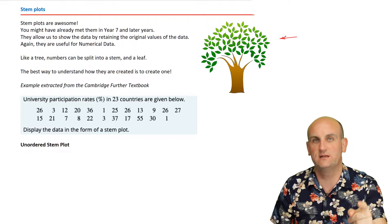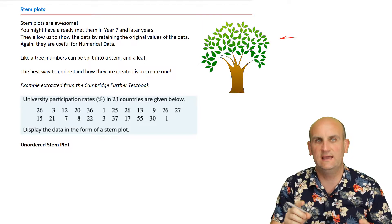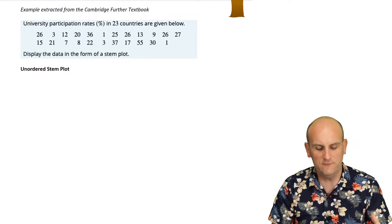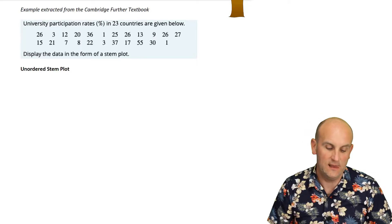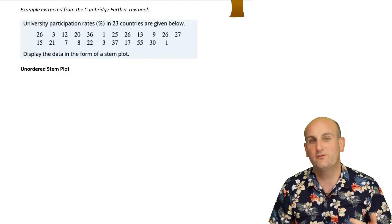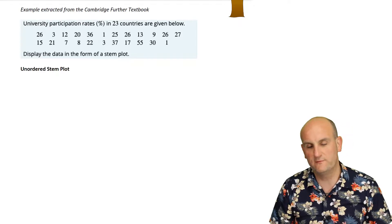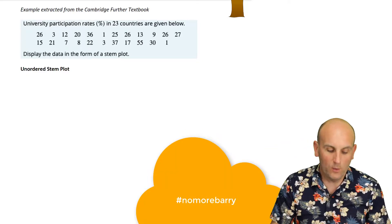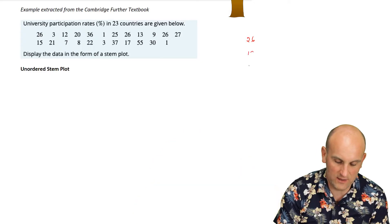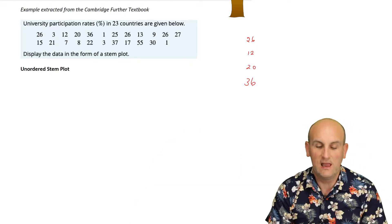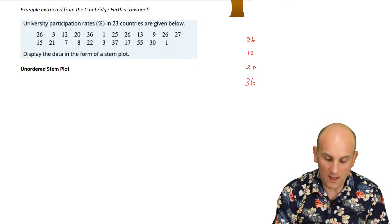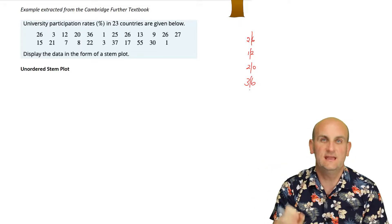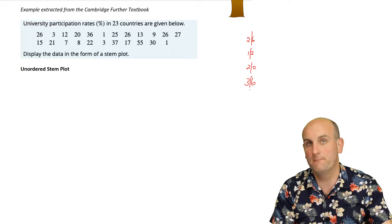We have another example from the Cambridge Further textbook: university participation rates in percent in 23 countries. Display the data in the form of a stem plot — same thing as a stem and leaf diagram. Each number, like 26, 12, 20, 36, has both a stem and a leaf. The last digit of every number is the leaf; all the digits before that are the stem.